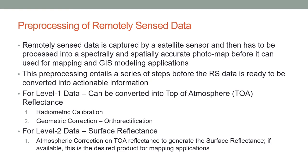Landsat data is available in two levels: Level 1 and Level 2. For Level 1 data, the data can be converted to the top of atmosphere reflectance; it is radiometrically calibrated and geometrically corrected. In other words, it is an orthorectified product and serves as a photo map. For Level 2 data, the surface reflectance is recovered from the top of atmosphere reflectance by atmospheric correction, and this generates the surface reflectance product, which, if available, is the desired product for mapping applications.